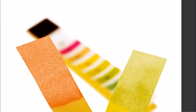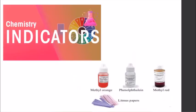Now, if we need to know whether something is an acid or a base, there are substances which change their color in the presence of an acid or base — these are called indicators. Indicators show a specific color range that tells us whether a substance is an acid or a base. The most common indicator used is litmus paper. There are other chemical indicators as well: methyl orange, phenolphthalein, and methyl red.